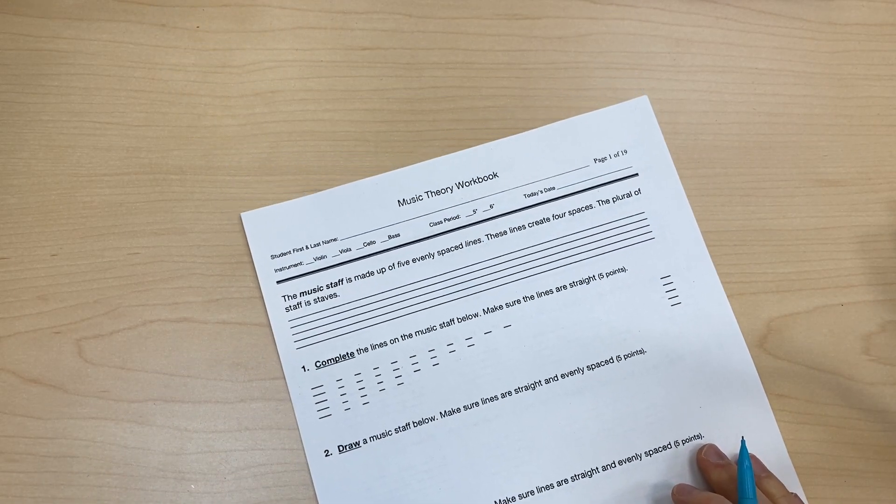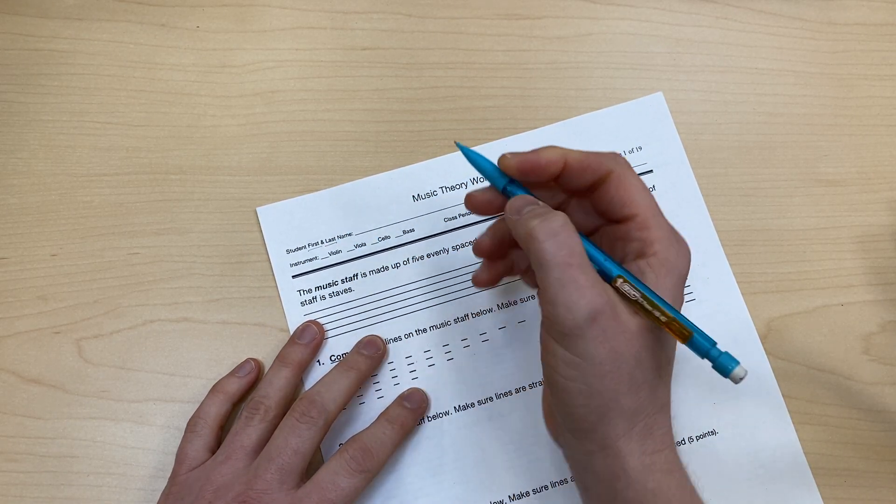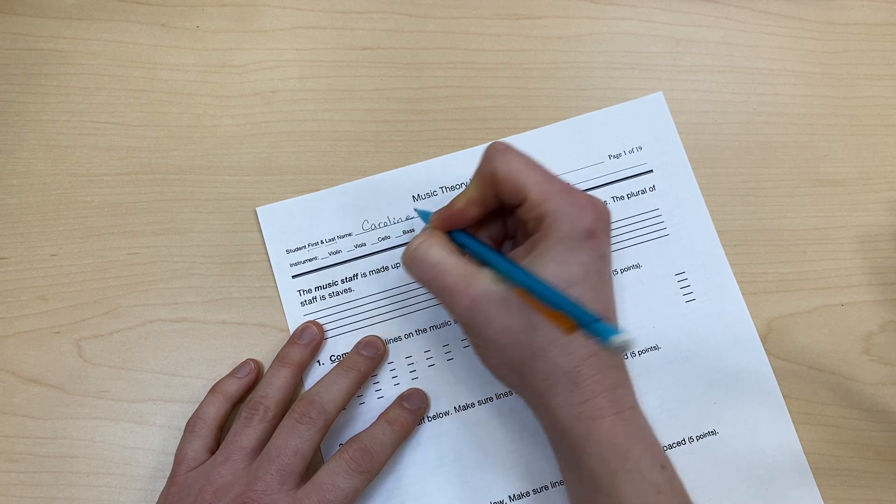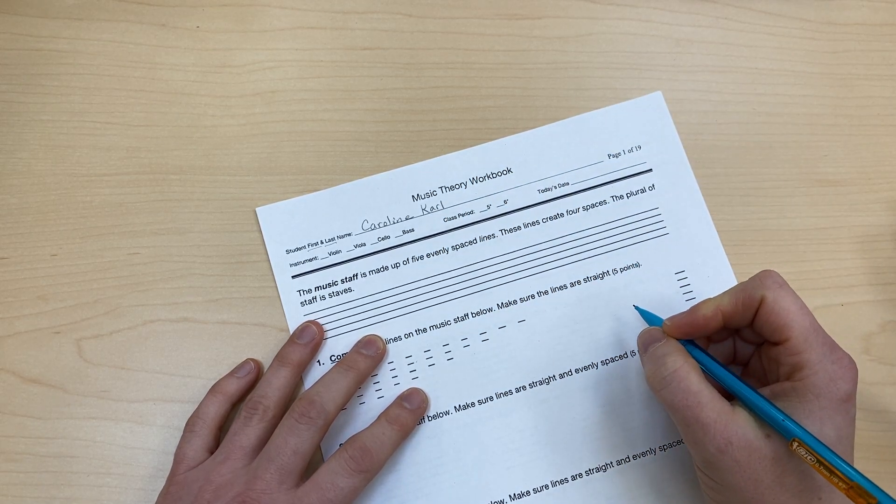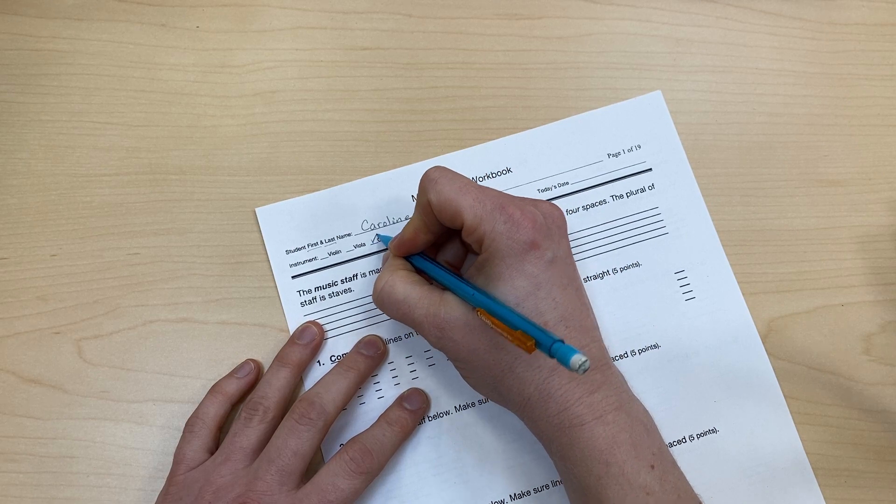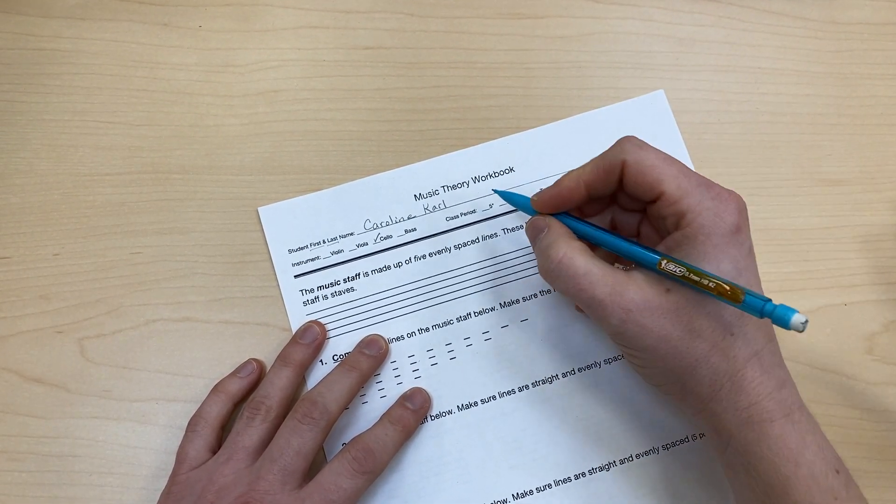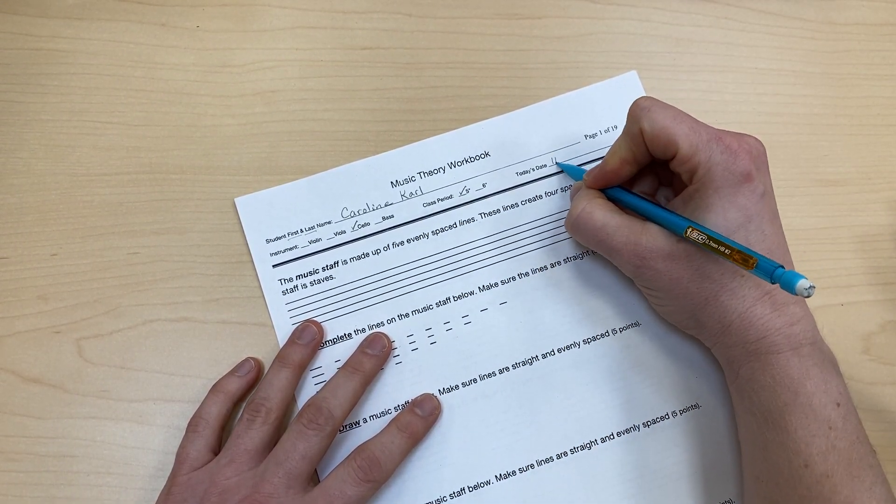We're going to come back up here to the top, and we see that it says first and last name. So you're going to make sure to write your first and your whole last name, not just the first letter. And then you're going to choose your instrument, your class period, whether it's fifth period or sixth period, and then you're going to put today's date on.